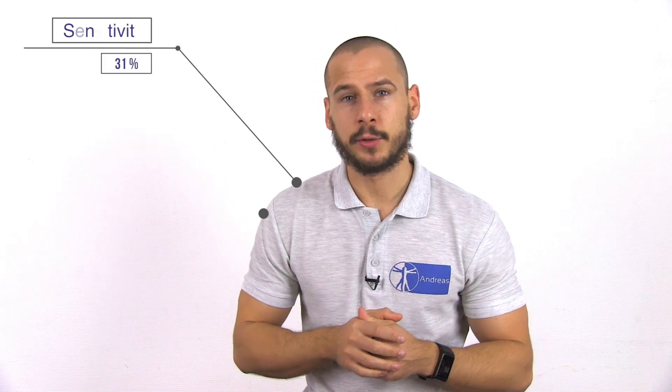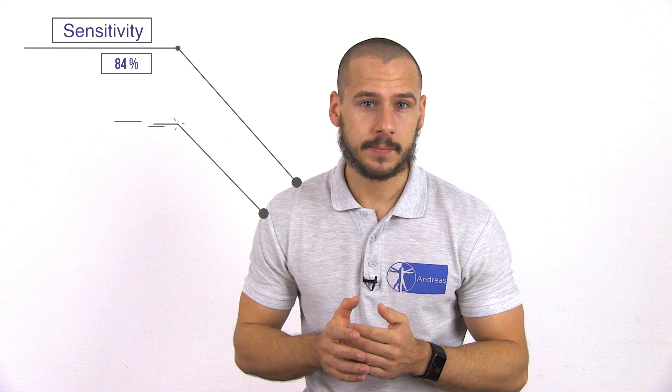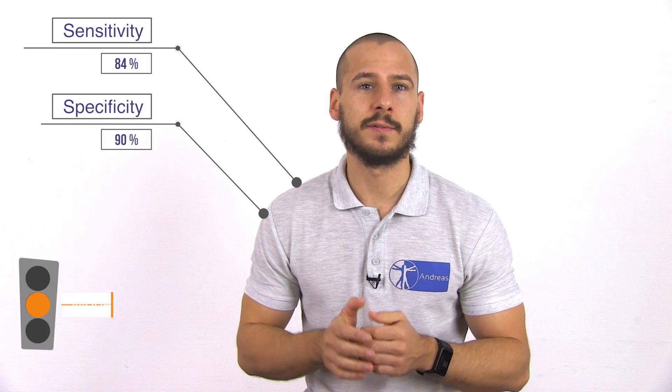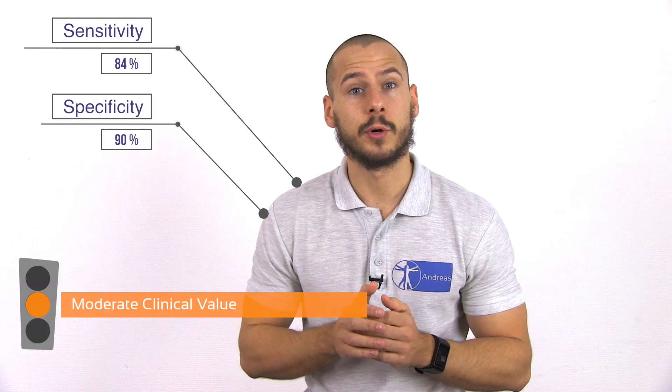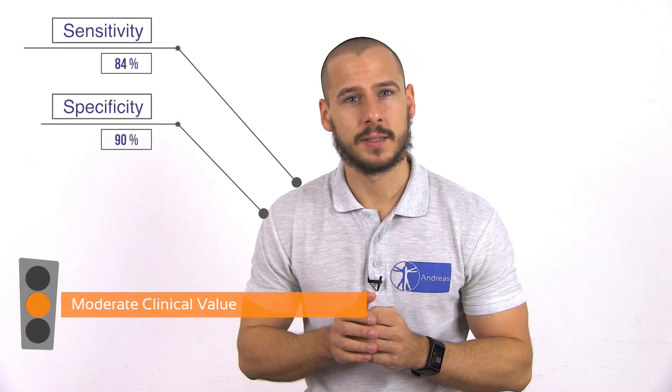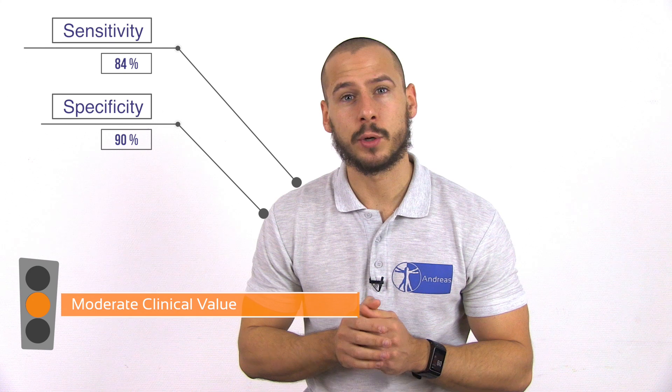Nonetheless, there are also physical tests which can give an indication for lumbar spine instability, one of which is the passive lumbar extension test, or PLET. According to Kazai et al. in 2006, it has a reported sensitivity of 84.2% and a specificity of 90.4%.